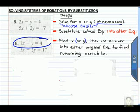First of all, let's agree that in the given system of equations, the equation 2x minus y equals 4 is simpler than the other equation 5x plus 2y equals 17. And so we are going to choose 2x minus y equals 4 to solve for y.